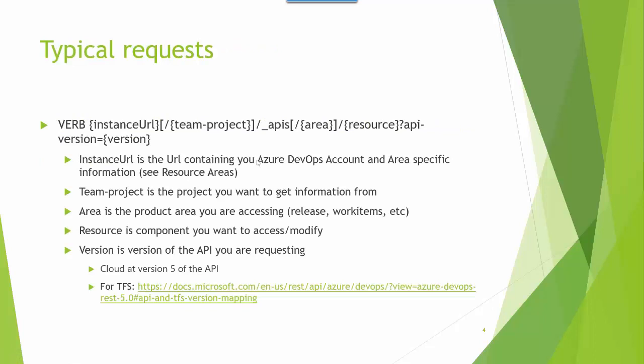A typical request contains a verb and an instance URL, the team project you want to access, areas and resource, and a particular version. The instance URL is essentially the URL needed to access resources, and it changes depending on whether you're on the cloud or TFS. Your areas indicate whether we're accessing releases, work items, etc., and the resource is a particular item within that area. For the cloud they're currently at API version 5 or 5.1; for TFS, versions range from 3 to 5 depending on which version you have.